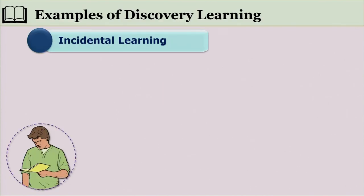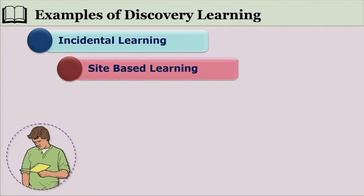Examples of discovery learning are many. Incidental learning occurs through TV, peer groups, and by exploring the environment at home, at school, during picnics, or on the spot. We incidentally come across new things and try to understand what they are, why they are there, and what happens when we manipulate them. This kind of unplanned learning through incidental encounters is called incidental learning.